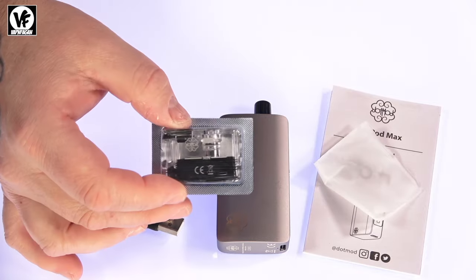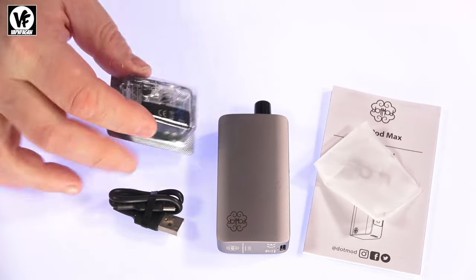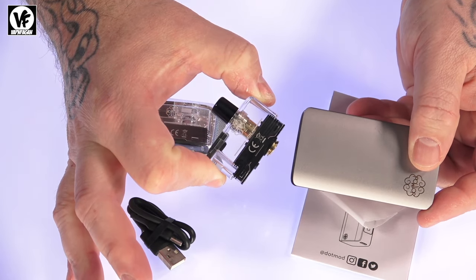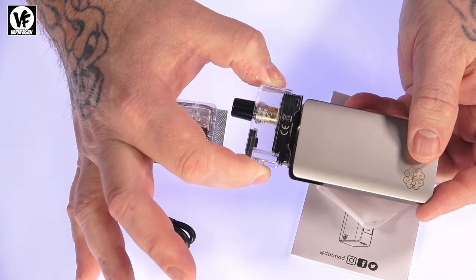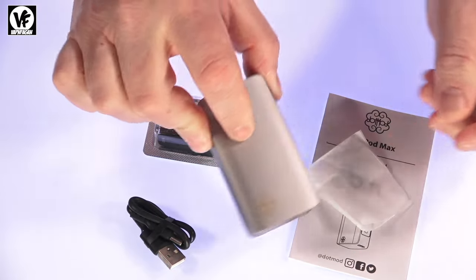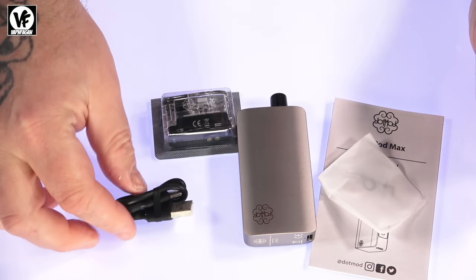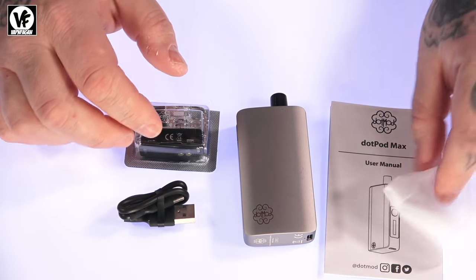You're going to get the DotPod Max. They're going to include two pods - one is a sealed pod and the one that's pre-installed is a pod with a replaceable coil head. They'll give you one coil head, one drip tip.